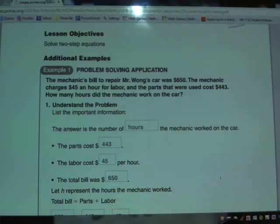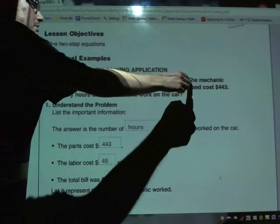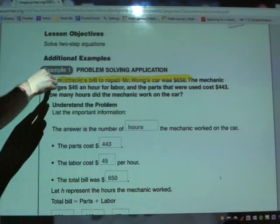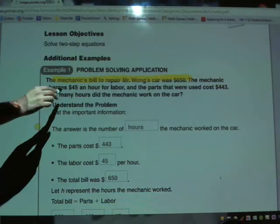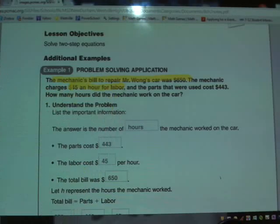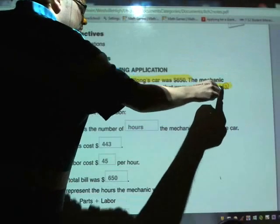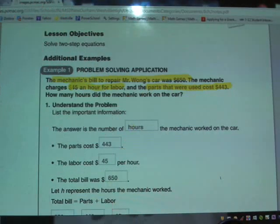Let's start off with the story problem in example one. It says the mechanic's bill to repair Mr. Wong's car was $650. The mechanic charges $45 an hour for labor, and the parts that were used cost $443. How many hours did the mechanic work on the car?